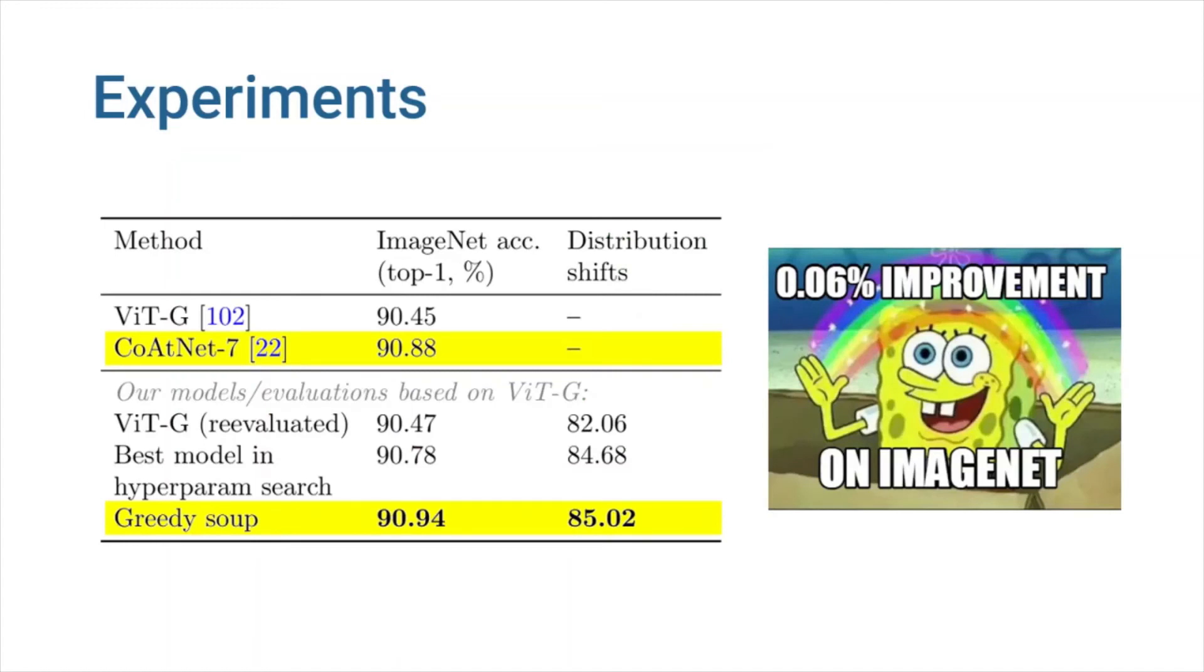Their greedy soup of VITG model achieves 90.94% accuracy on ImageNet, outperforming CodeNet, which used to be the state of the art on this benchmark.